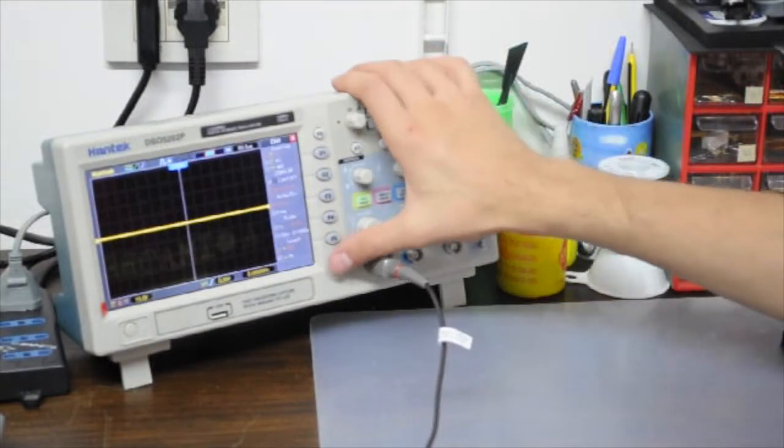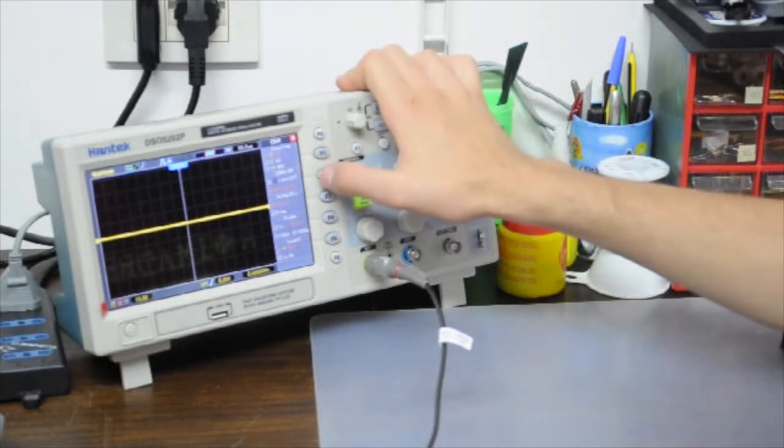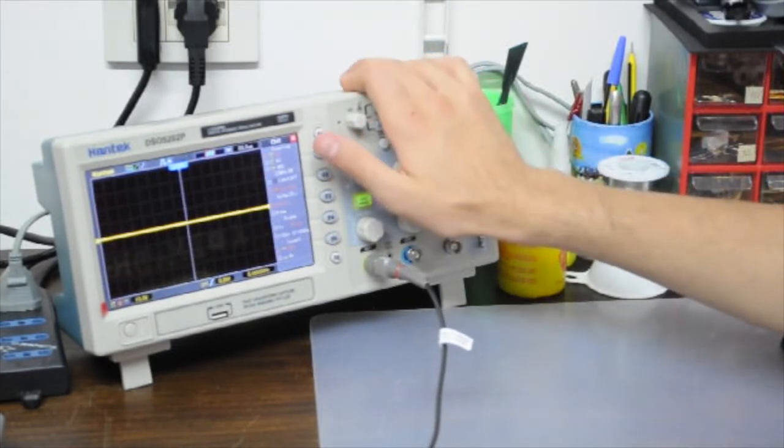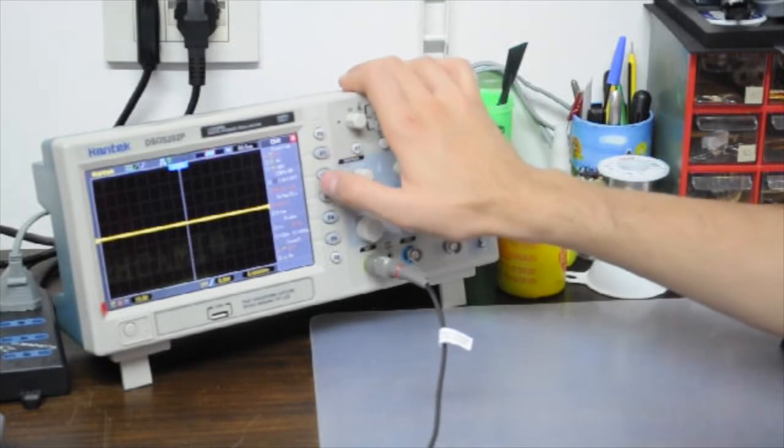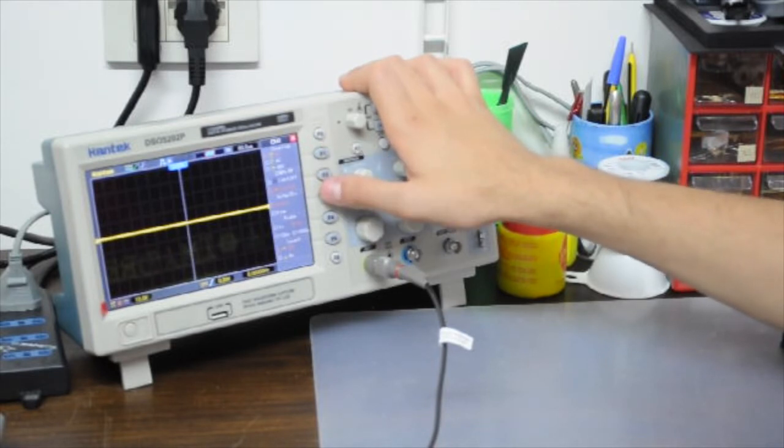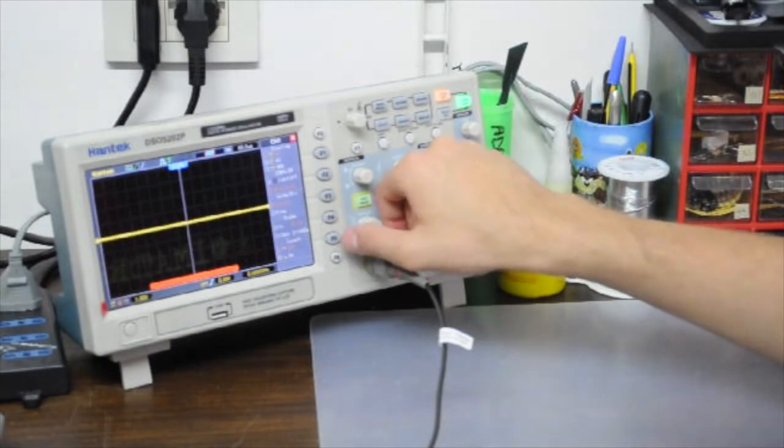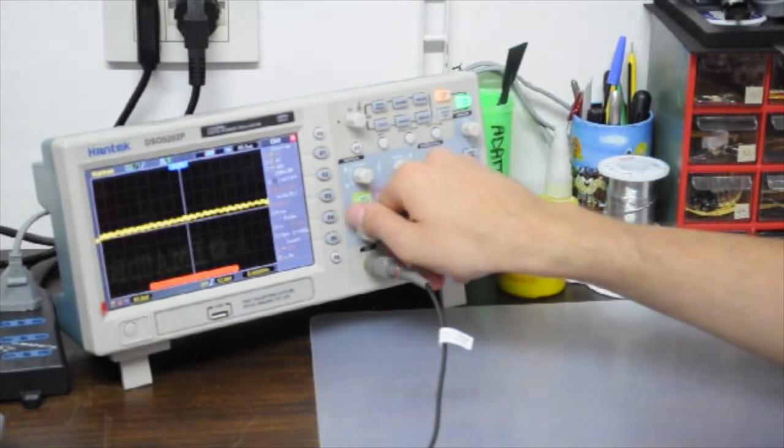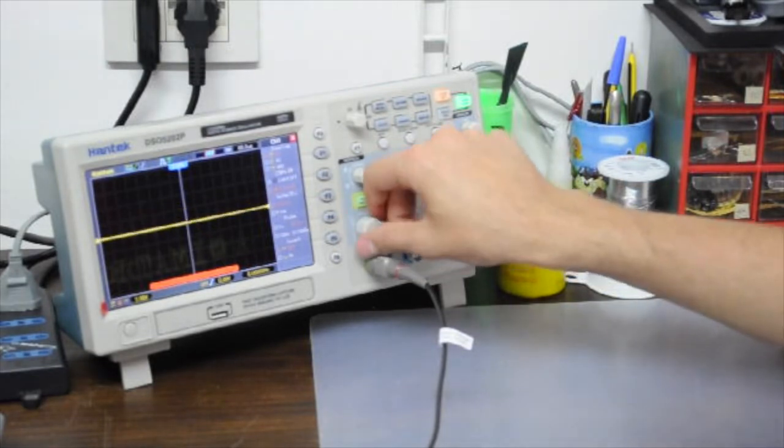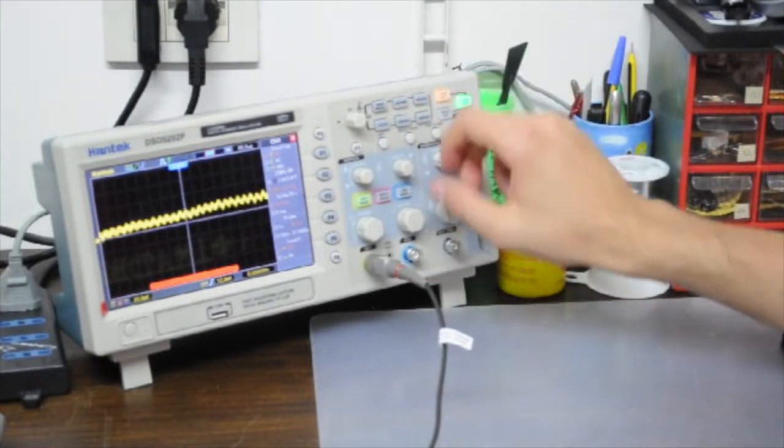So let's try to see a signal here. Just check the coupling. We are in DC. We have a 20 MHz bandwidth limitation. I don't know very well how this works because I don't have the manual shipped in the box. We have a coarse volt division: 1, 2, 5, 20 millivolts and so on.